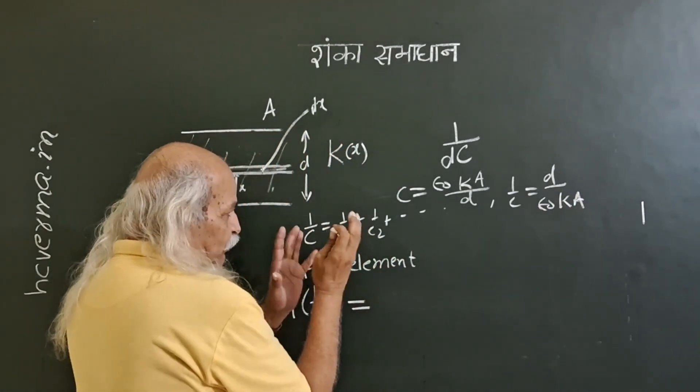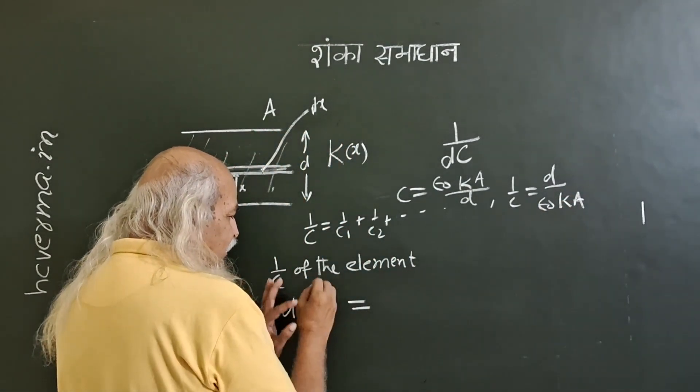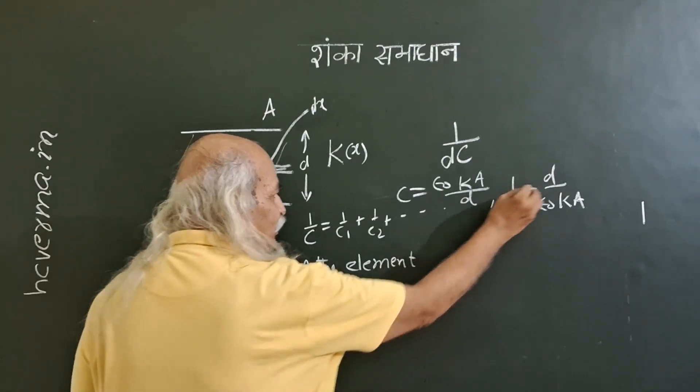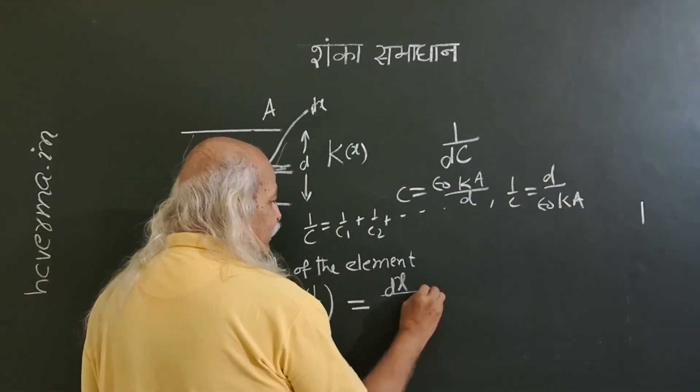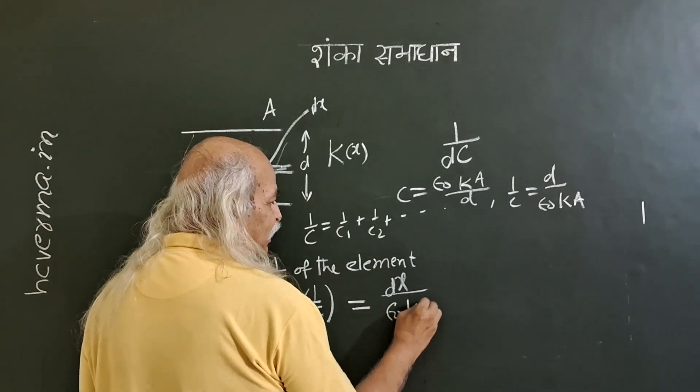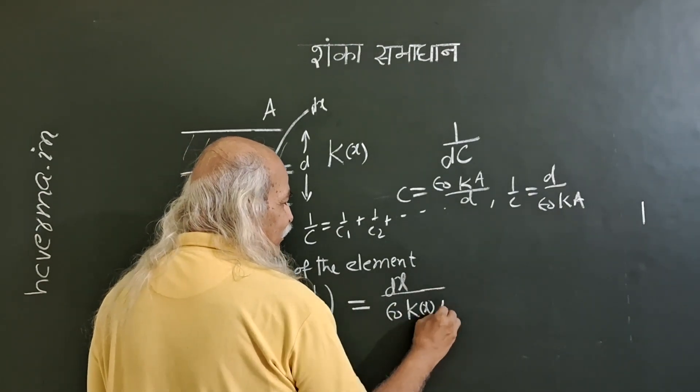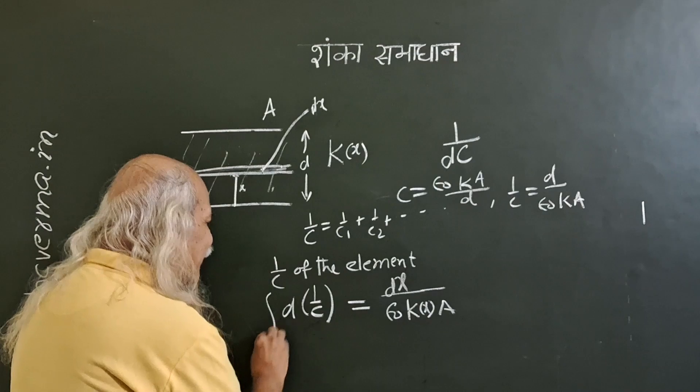Here for the small element, for that, this differential 1 by c will be, the separation is dx, so you write dx here, then epsilon here and k is a function of x and then the area.